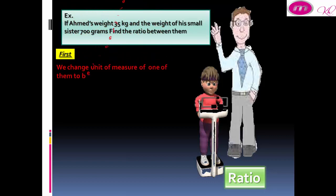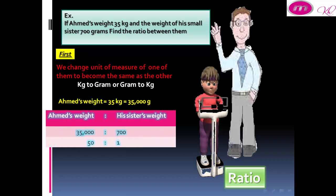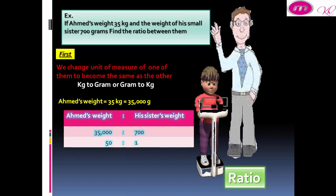First, we change the unit of measure of one of them to become the same as the other. Ahmed's weight equals 35 kg equals 35,000 grams. Now, Ahmed's weight to his sister's weight is 35,000 to 700, divided by 700, equals 50 to 1.